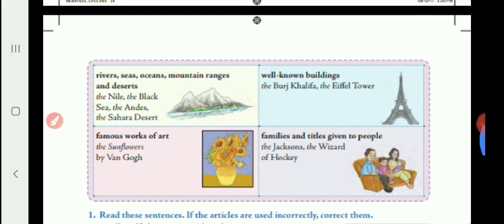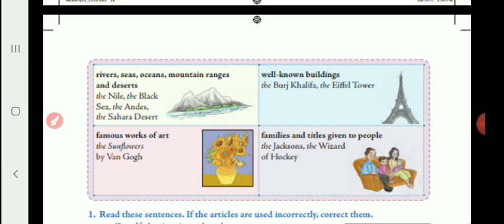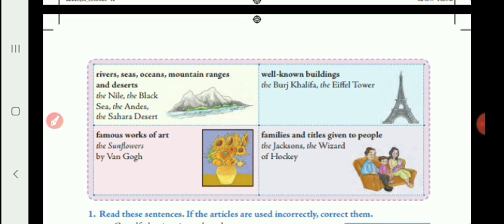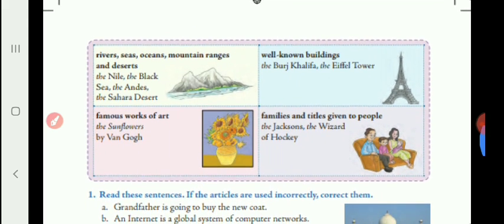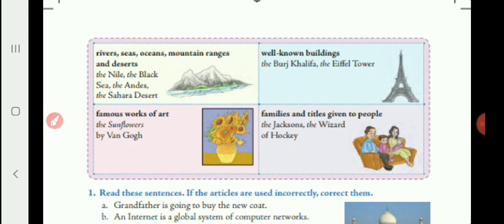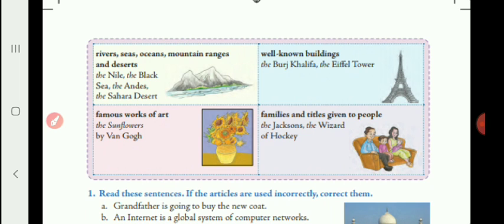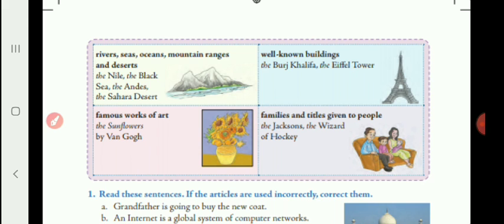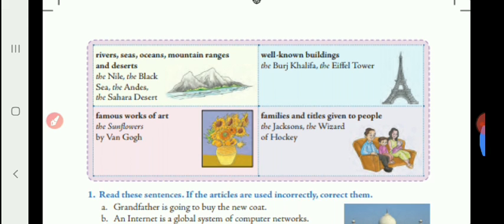Although we generally do not use an article before proper nouns, we do use the definite article 'the' before names of the following: for example, 'the Ramayana', 'the Holy Book'. We also use 'the' before countries whose names include words like kingdom, states, or republic, and countries with plural nouns — for example, 'the United Kingdom', 'the Netherlands'.